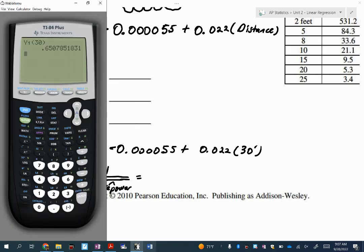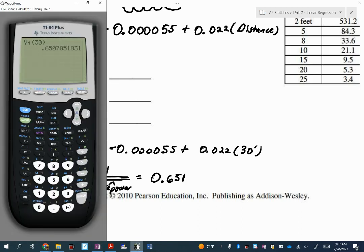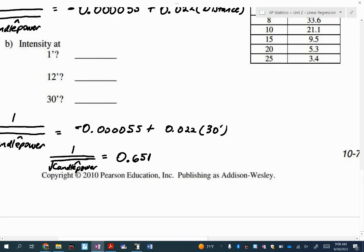So one over the square root of my candle power equals 0.651. If we're going to actually get the answer here, I'm going to move candle power to the right-hand side, divide 0.651 to the left-hand side. So one over that will equal the square root of the candle power, and then I want to square both sides. So I'm going to do one over this number. Again, this is still not it, this is equal to the square root of it now. So to get rid of that square root, I'm going to square both sides to get 2.4. So my answer at 30 feet was 2.4.